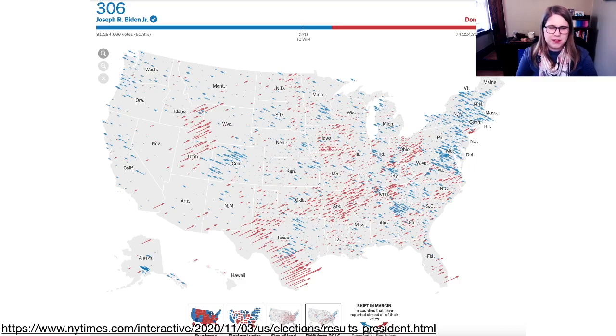Maybe this doesn't fit right in this section. But it is showing more variables because it's showing the position of the county, it's showing whether the county went for Biden or Trump. And then it's showing how much of a shift there was between the 2016 and 2020 election. So again, showing lots of variables at once.